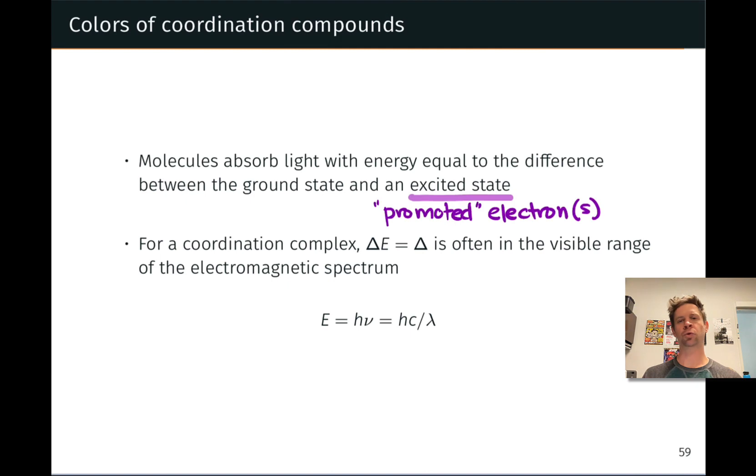In transition metal coordination complexes, the crystal field splitting often corresponds to the visible range of the electromagnetic spectrum, meaning it takes about the energy of a visible light photon to promote an electron, for example, from the lower energy T2G level to the higher energy EG level of the octahedral d orbital splitting.